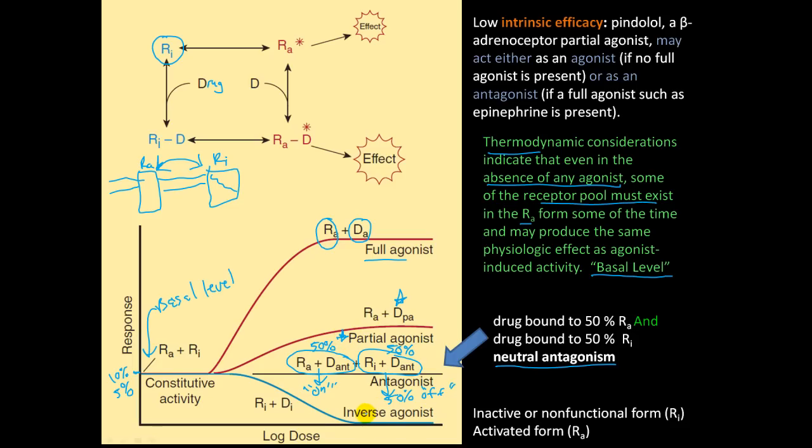And then you have an inverse agonist. And that's if you have a receptor that's in its inactive form, and then you have a drug that's in its inactive form. Then you actually bring that down. Let's say all of these receptors that were because of this thermodynamic equilibrium, the drug binds to all these and turns all the receptors off. Well, then you have an inverse agonist.